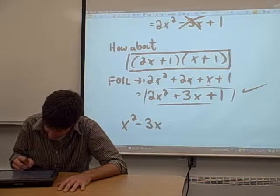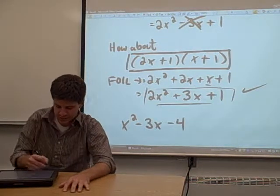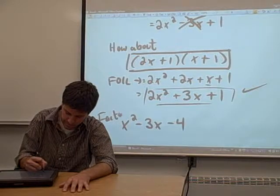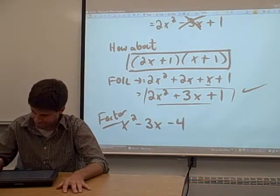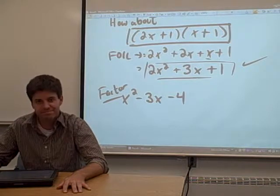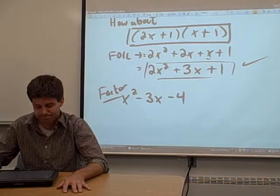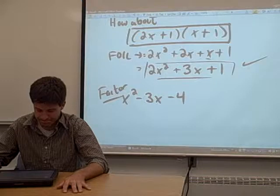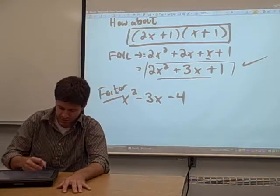x squared minus 3x minus 4. Try to factor that trinomial. Okay, let's see how we can do this.